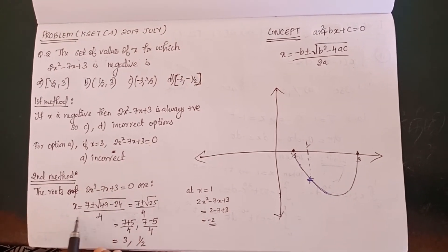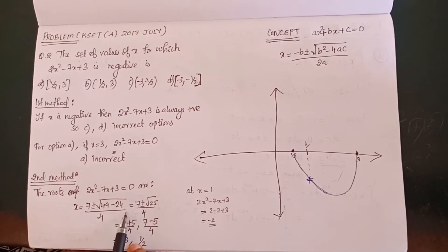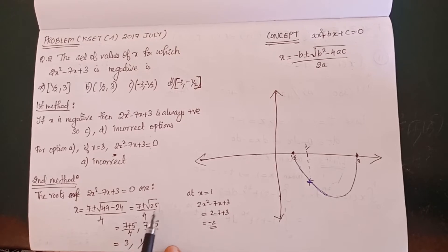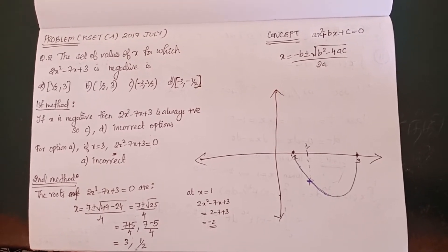So here we have x equals 7 plus minus root of 49 minus 24, all over 4. That is equal to 7 plus minus root of 25 over 4, which gives us 3 and 1/2.